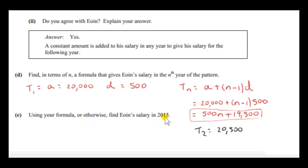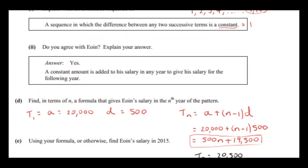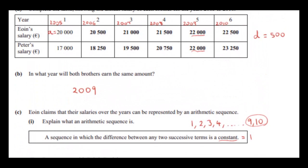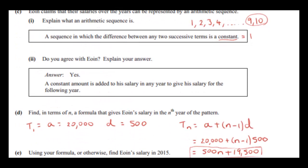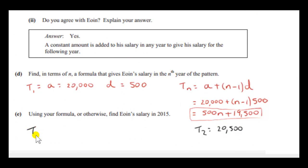Next, we will use the formula to find Owen's salary in 2015. So let's just look at this table. The sixth term corresponds to the year 2010. So if we imagine extrapolating, we just extrapolate to the year 2015. What term of sequence is that? Well, the seventh is 2011, 8th 2012, 9th 2013, 10th 2014. This is the 11th term. So we want T11 of our sequence. We don't have to do it this way, but let's just start by doing it this way. So we just plug 11 into this. So we have 500 times 11 plus 19,500. You will get 25,000 euros.